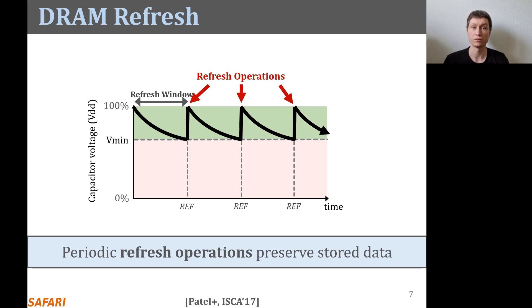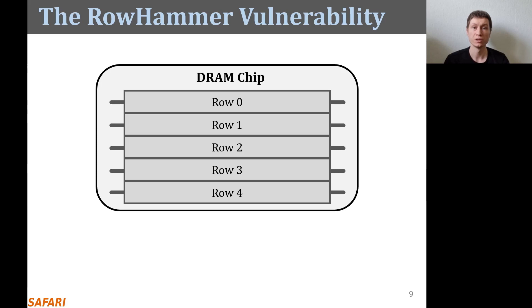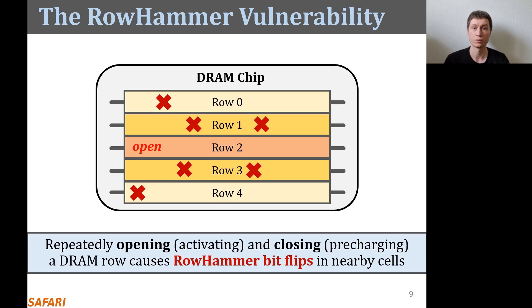Now I will tell you about RowHammer and the main RowHammer protection mechanism implemented in DRAM chips today. In order to access data from a DRAM row, say row 2, the memory controller first opens or activates the row. After all requests are serviced, the memory controller must close or precharge the row to begin accessing another row. Due to increased cell-to-cell interference as a likely result of increased cell packing density, rapidly activating and precharging a DRAM row can result in bit flips in nearby rows. This phenomenon is known as RowHammer. We refer to the rapidly accessed row as an aggressor row, and the rows containing bit flips as victim rows.